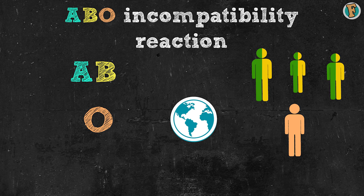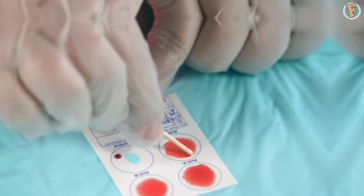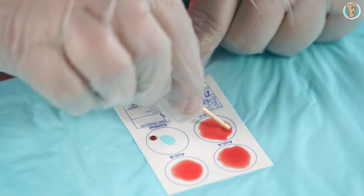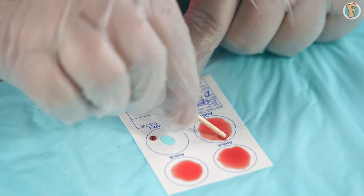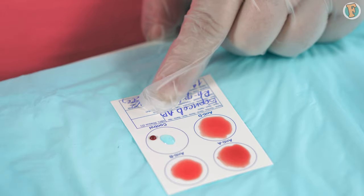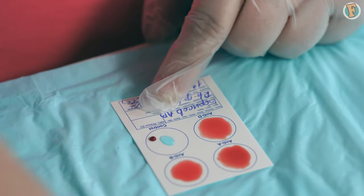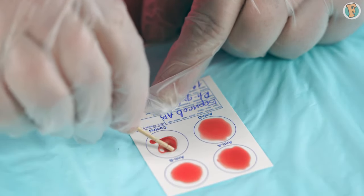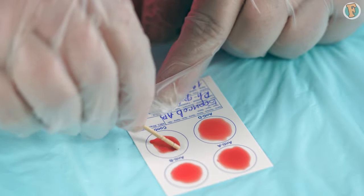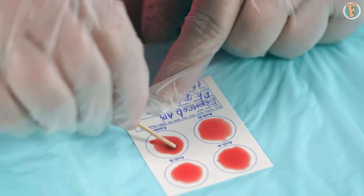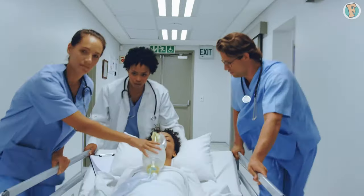But you can only receive type O blood. Your doctor will determine your blood type before a blood transfusion. A small sample of your donated blood will be cross-matched — the two blood samples are then mixed and observed for a reaction. This allows your doctor to ensure an incompatibility reaction does not occur.